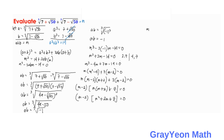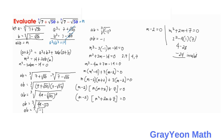We set each factor to zero: m minus 2 equals 0, and m squared plus 2m plus 7 equals 0. Checking the discriminant of the second factor: 2 squared minus 4 times 1 times 7 equals 4 minus 28, which is negative 24. Since it's negative, the solutions are non-real, so we reject that factor. Therefore m equals 2.